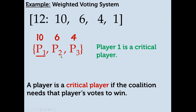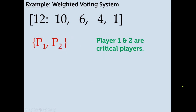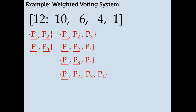Player 2 is not critical because removing Player 2 leaves 10 plus 4, which does meet quota. By the same rationale, Player 3 is not critical either. In the coalition of Player 1 and Player 2 — 10 plus 6 meets quota — both players are critical: removing Player 1 leaves only 6 votes, and removing Player 2 leaves only 10 votes, neither meeting quota. So both are underlined. Here are all the winning coalitions and critical players in each coalition identified.